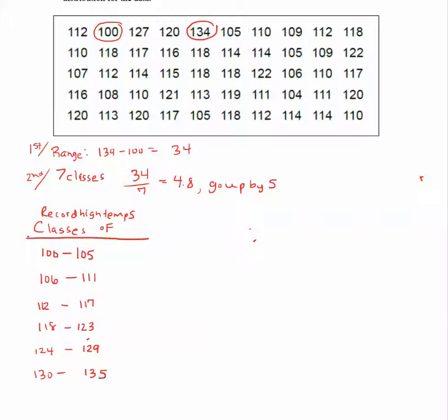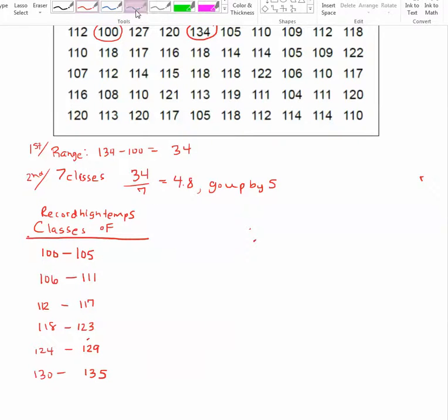Now this will be my last class because my highest number in the data was 134, and 134 is going to land in this last class. Notice that I do not end the class with 134. You have to be consistent with adding 5 each time.